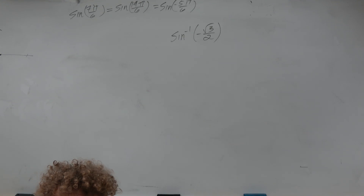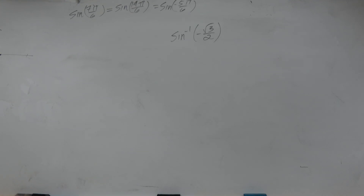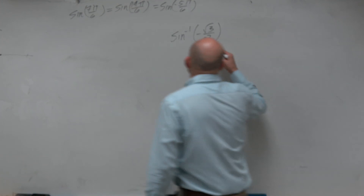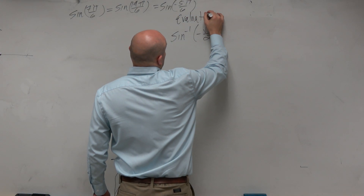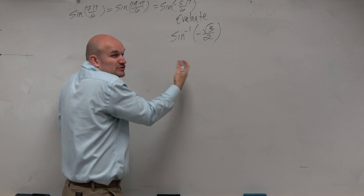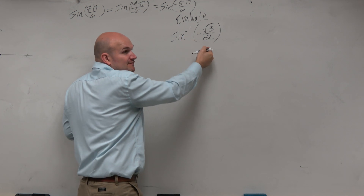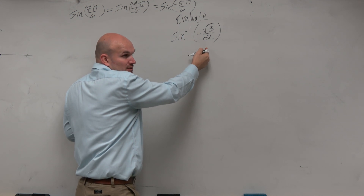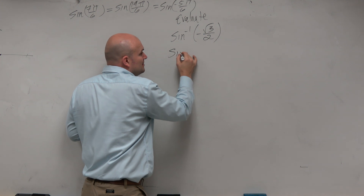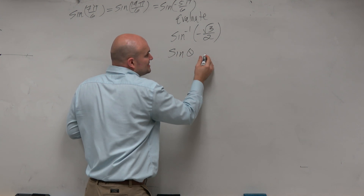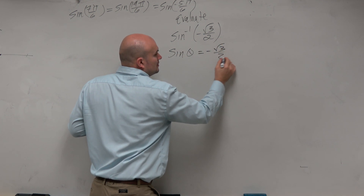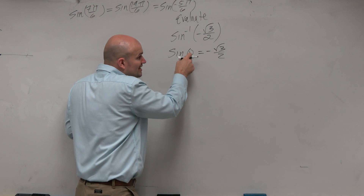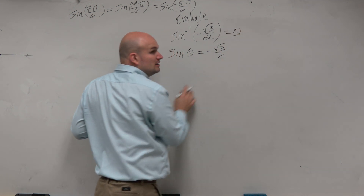So in this equation, it's so important to understand what exactly we're trying to find. We're asking to evaluate — so what are we trying to find the value of? This is sine inverse of some value, and this comes from this equation. So we're trying to find the value of an angle.